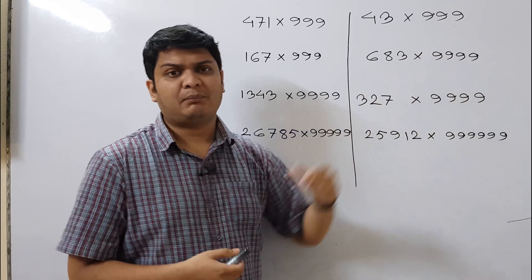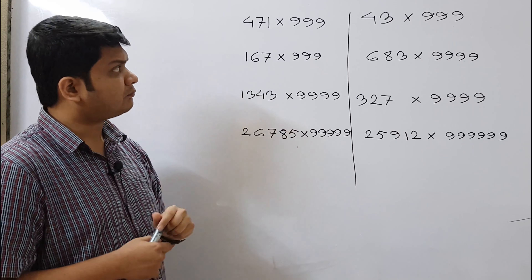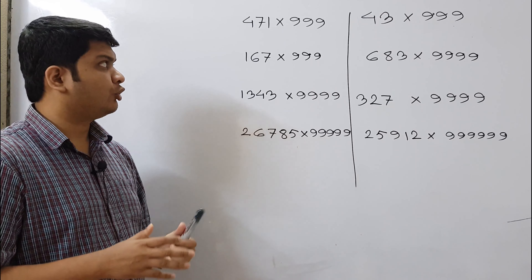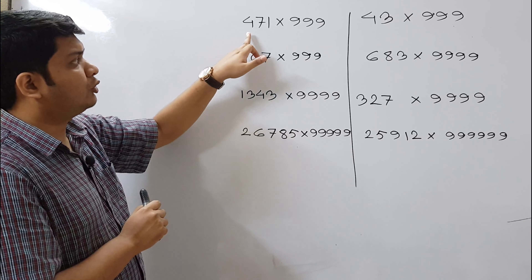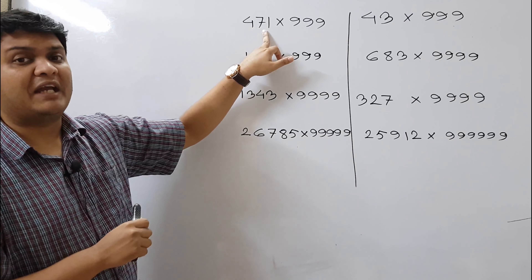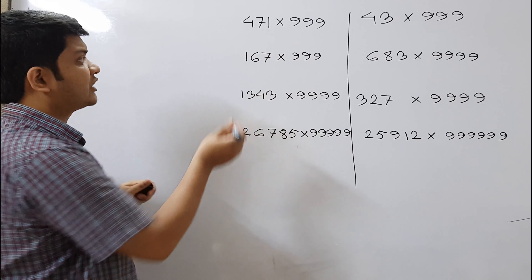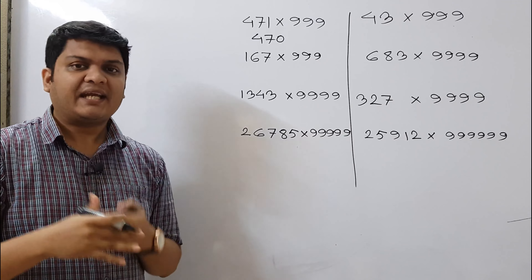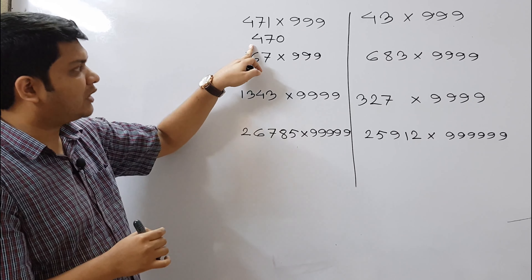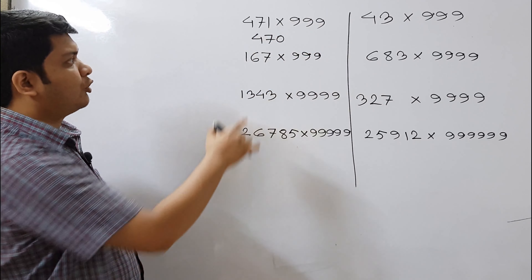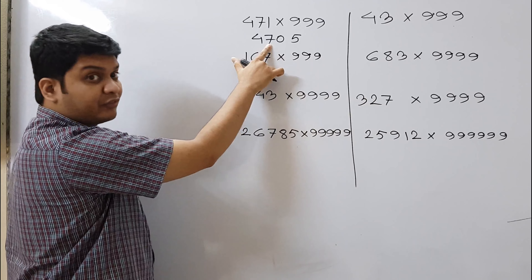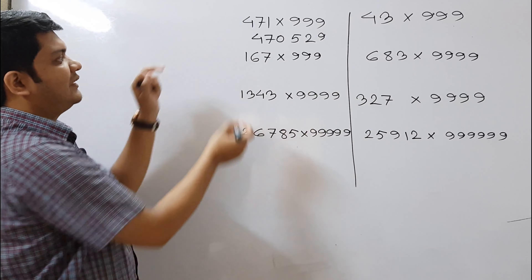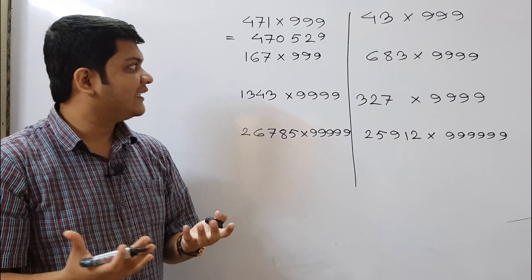Let's start with Case 1, when you have the same number of digits in the multiplicand and the multiplier. First, you need to decrease the multiplicand by 1 — so for 471, you write 470. The second step is to subtract that number from 999: 9 minus 4 is 5, 9 minus 7 is 2, and 9 minus 0 is 9. So the result is 470 | 529.